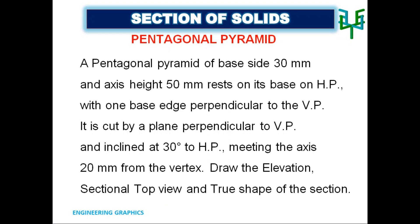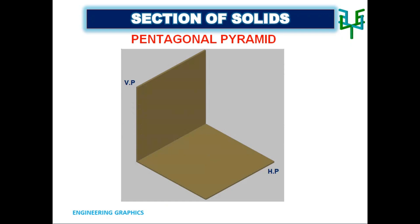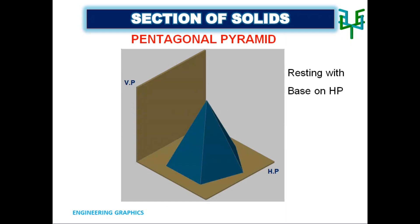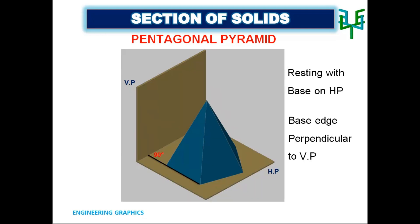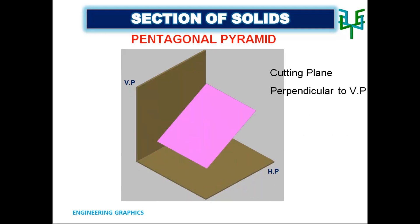The solid, i.e. the pentagonal pyramid, is resting with its base on the ground or HP. While the base is on HP, one edge of the base is perpendicular to VP. Then the pyramid is sectioned by a plane which is perpendicular to VP and inclined to HP.